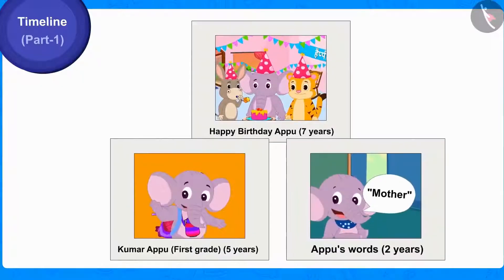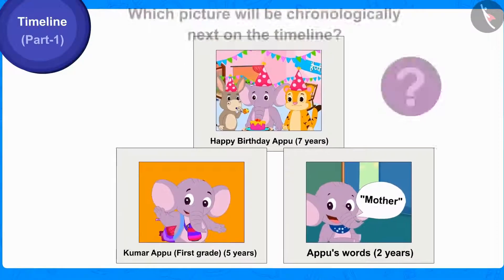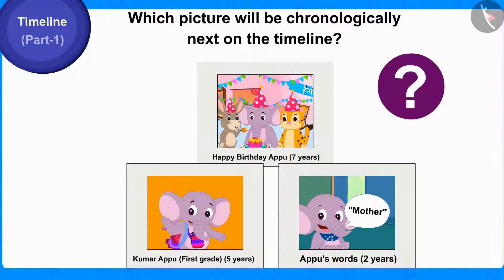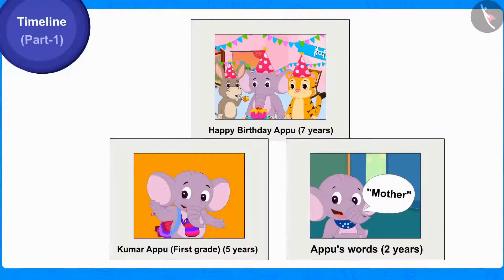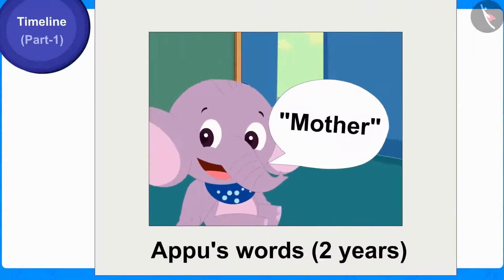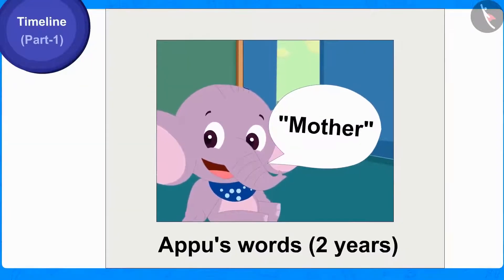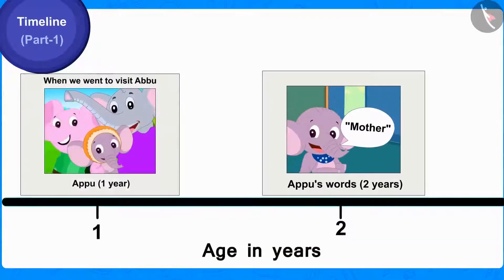Can you tell, out of these pictures, the age of which picture will be chronologically next on the timeline? Well done, children, you have found the correct answer. This picture, in which Appu was two years old, will be shown chronologically next on the timeline by writing two years on it.